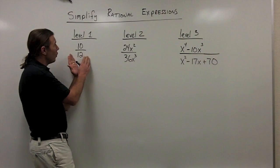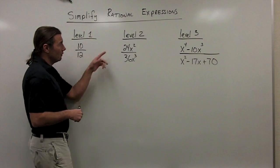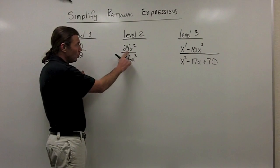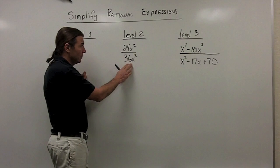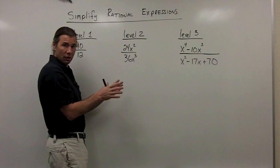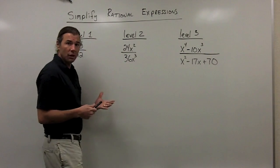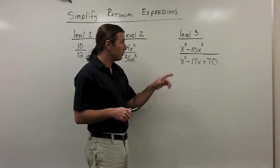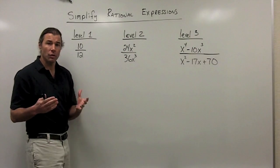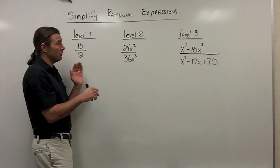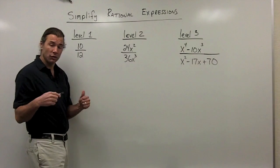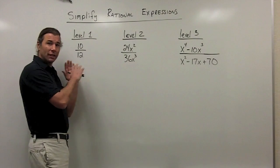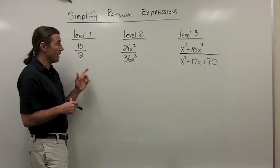Here's our level 1 rational expression — it just has numbers. Then at level 2, we throw in some variables, but notice at level 2 we still have just one term in both the numerator and denominator. Finally, at level 3, we're going to have more than one term in the numerator and denominator, and we end up having polynomials in both. The technique I'm going to show you here will work for all three levels when we go to simplify them, and also when we go to multiply, divide, and add and subtract — all of this technique will carry over to all of those situations with rational expressions.